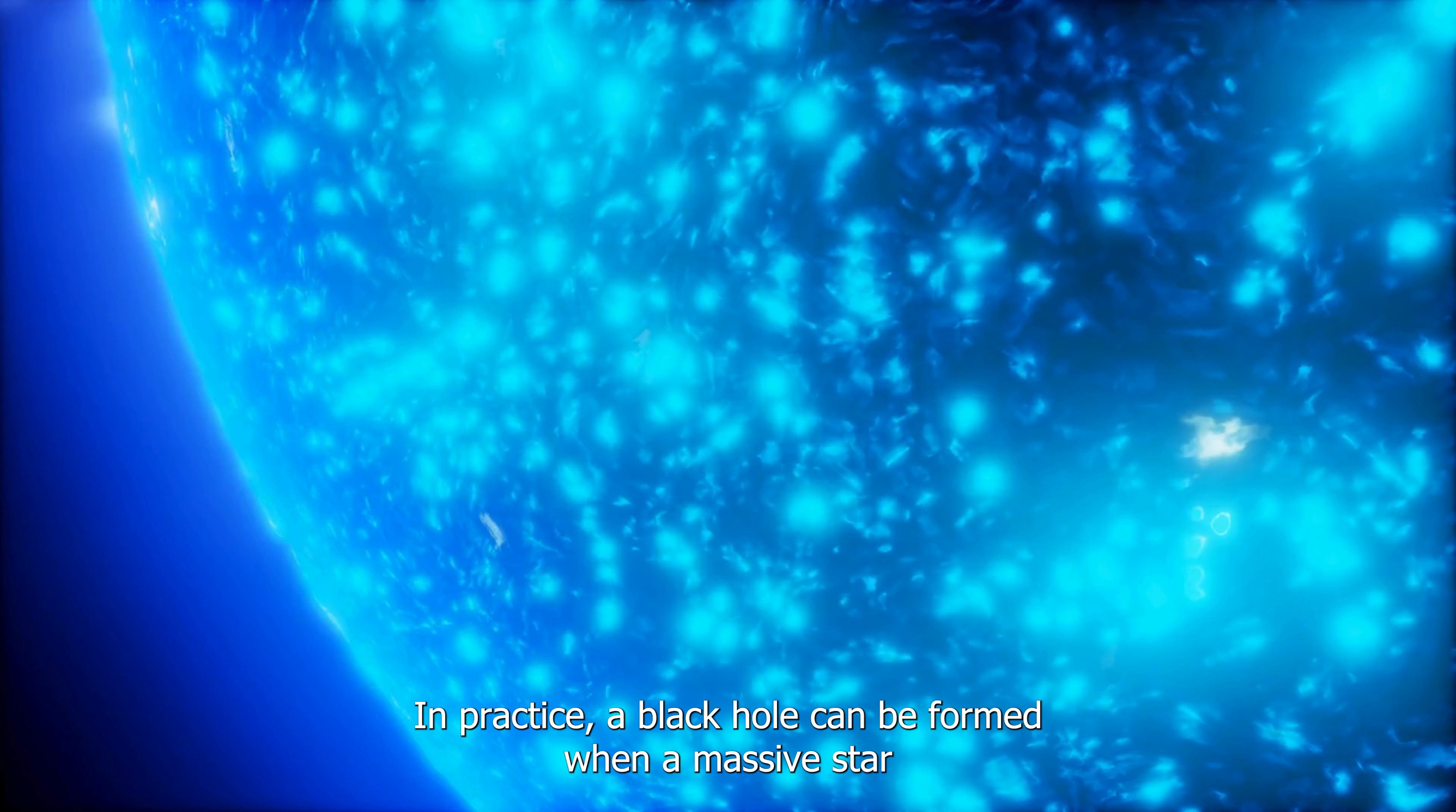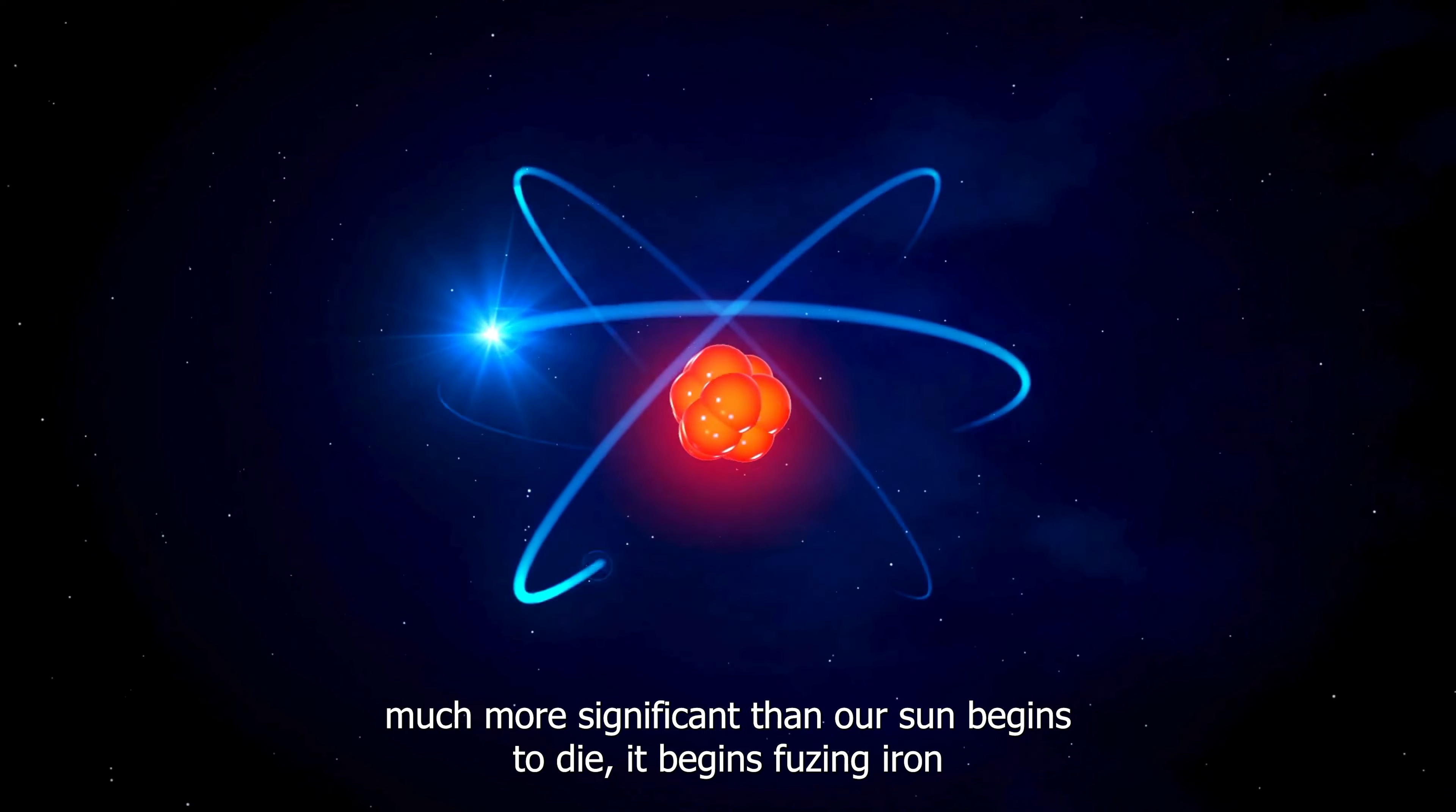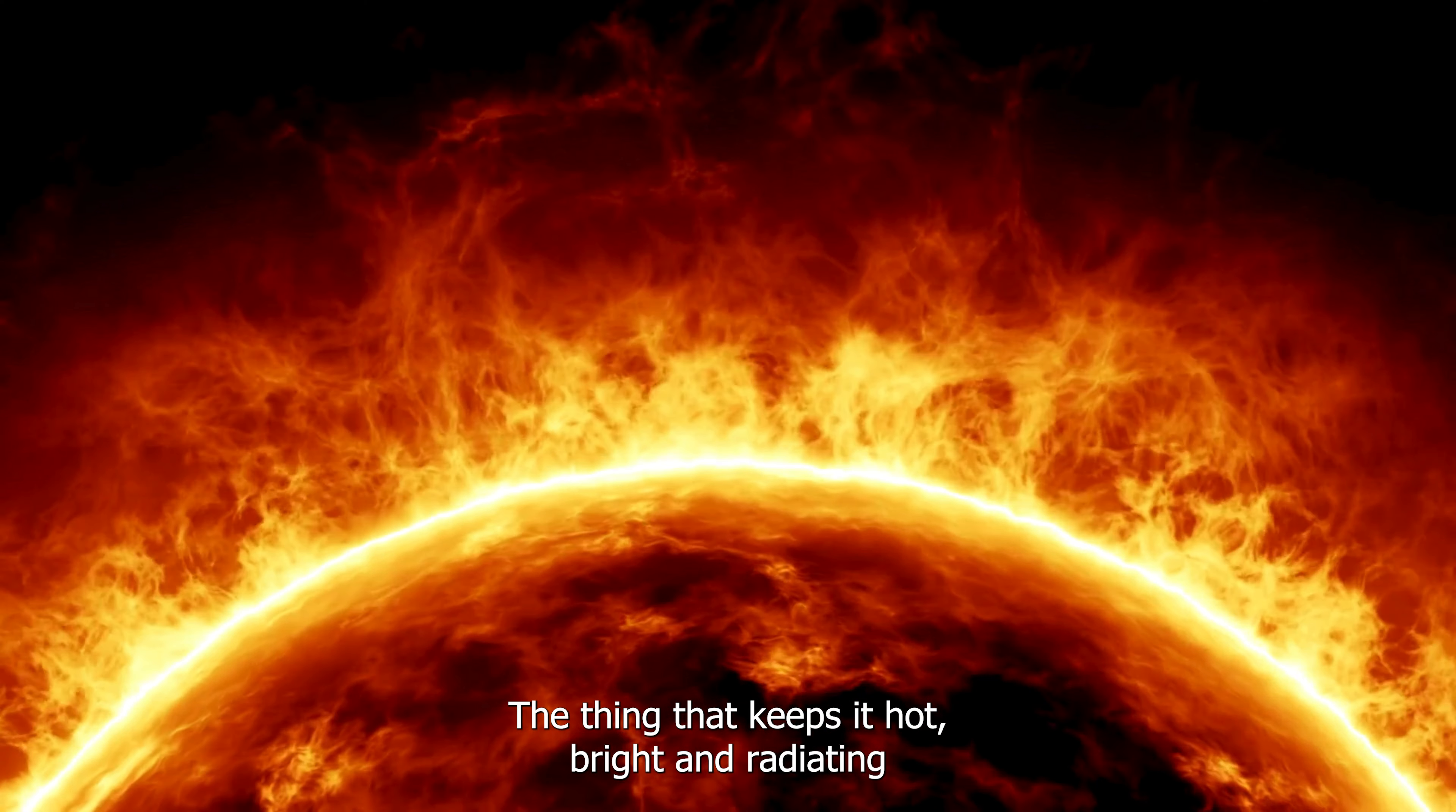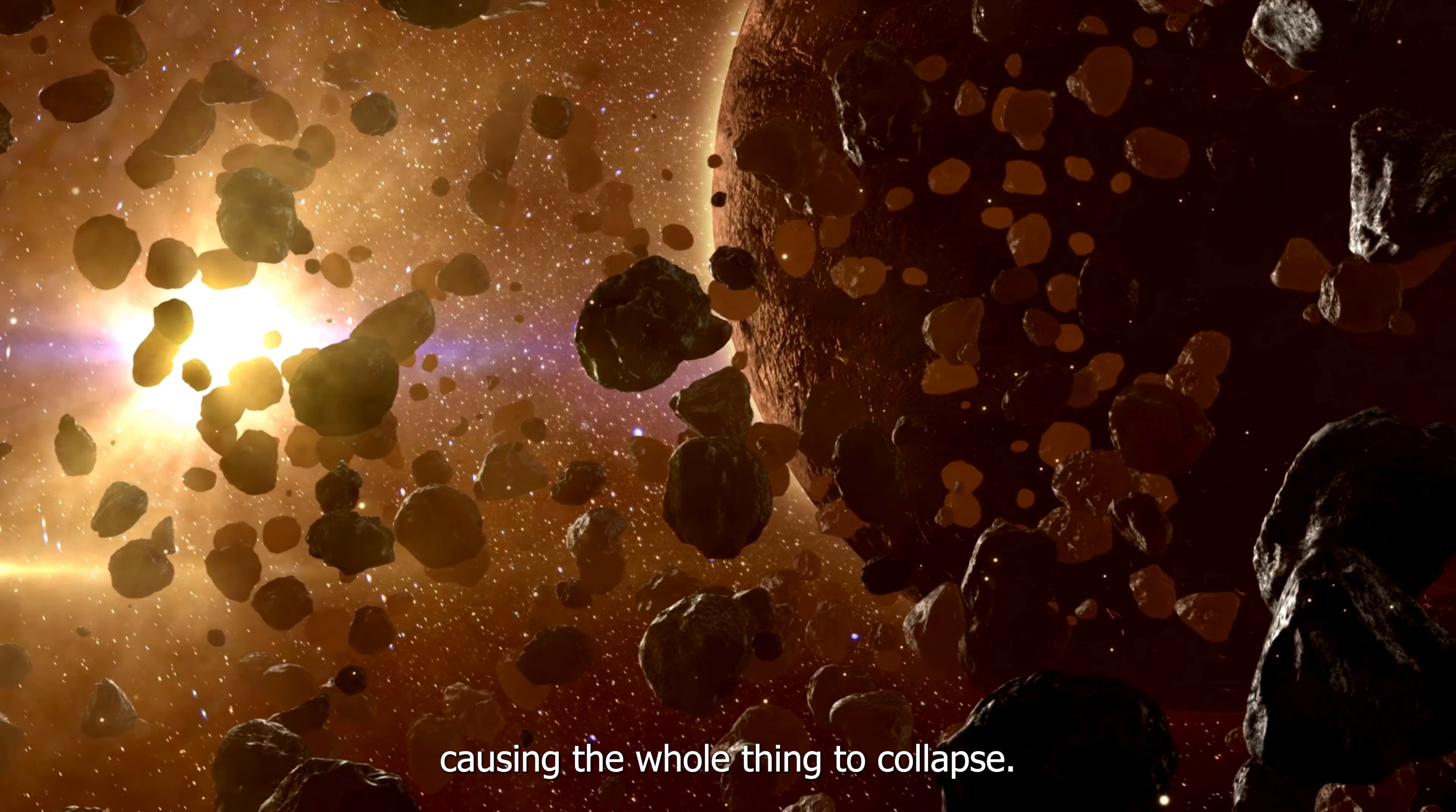In practice, a black hole can be formed when a massive star, much more significant than our sun, begins to die. It begins fusing iron at its core, which builds up on the inside until the star's fusion, the thing that keeps it hot, bright, and radiating, cannot counteract the extreme pull of the massive star's gravity, causing the whole thing to collapse.